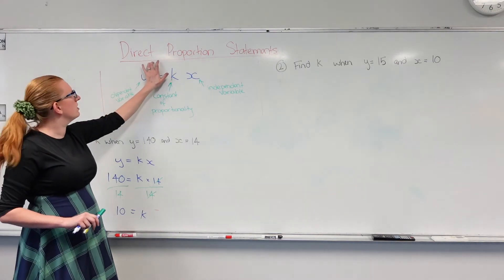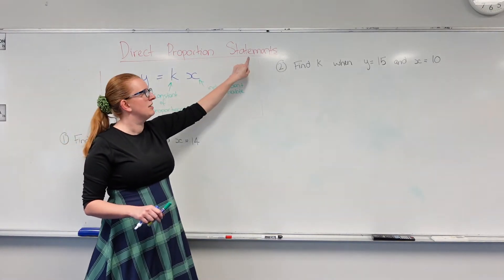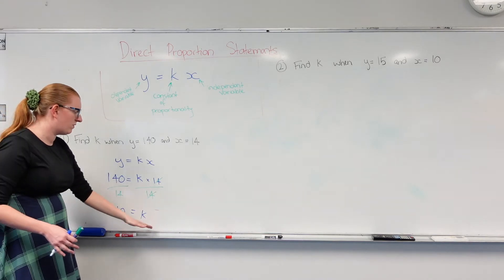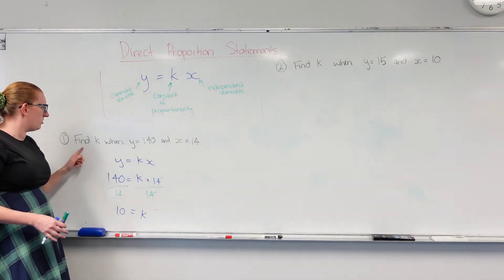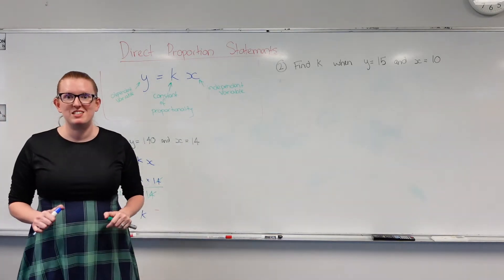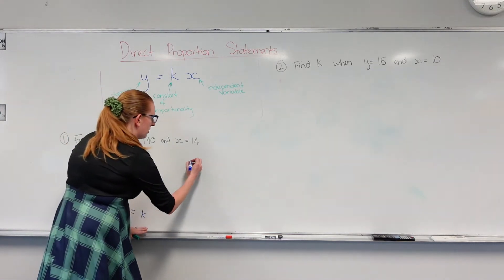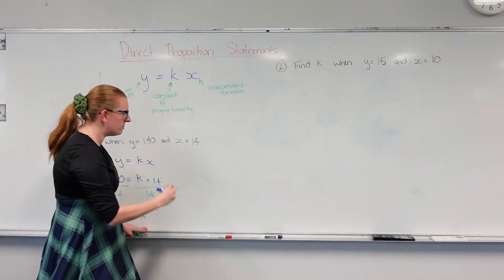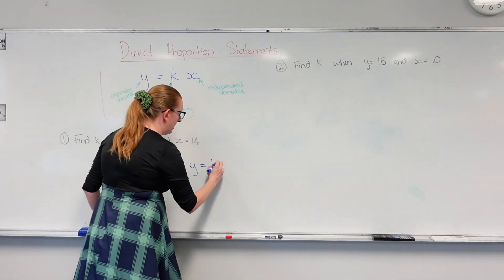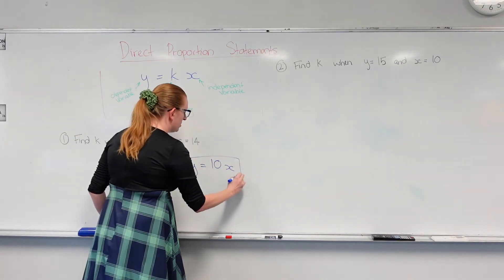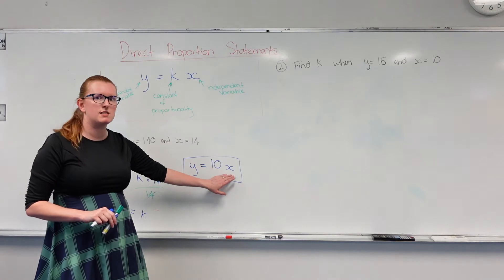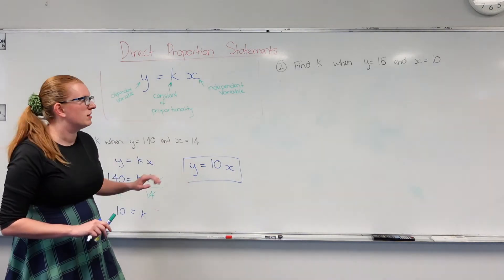But you'll notice that this part of the topic is called direct proportion statements. So I'm not stopping here. The goal isn't just to find what k is equal to. I want to write a direct proportion statement, and all I do for that is I just rewrite my formula. Y equals, but instead of k, I put what k is equal to, so 10x. And that is my direct proportion statement. So I'm not putting any values for y or x, I'm only putting a value for k.